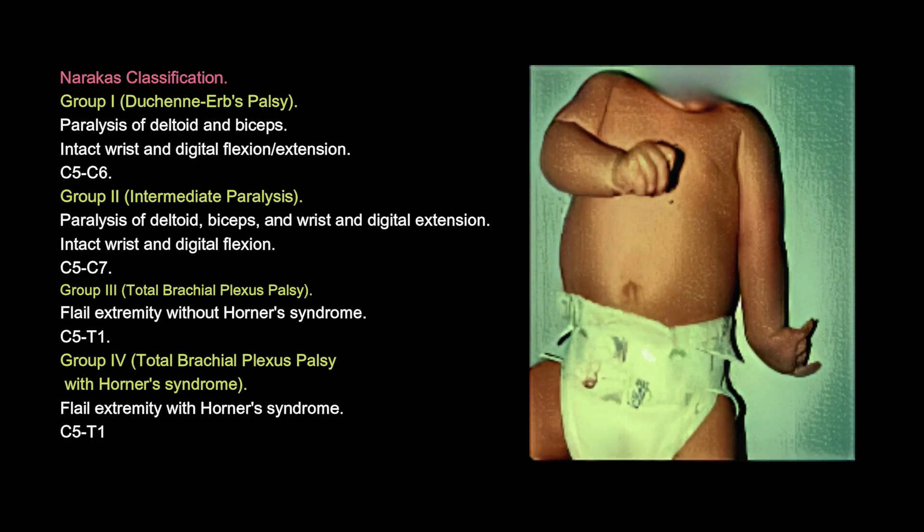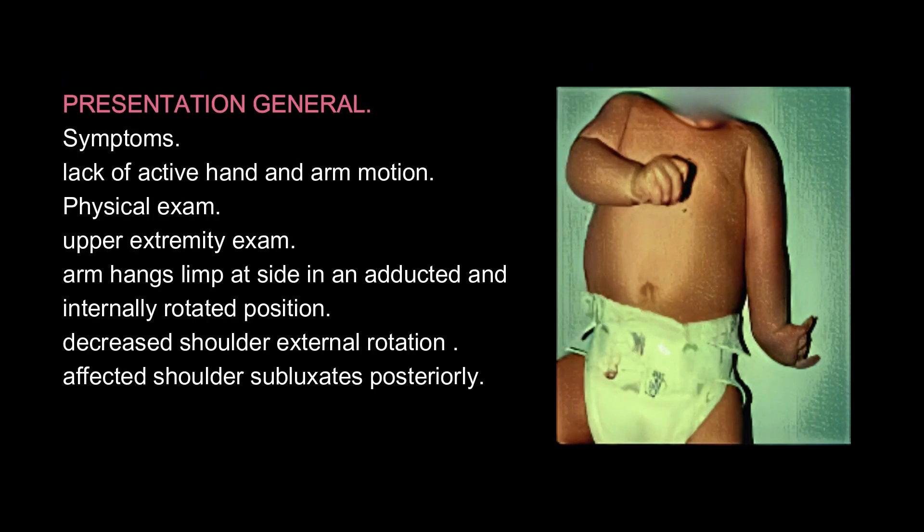Narakas classification: Group 1 (Duchenne-Erb's palsy): paralysis of deltoid and biceps with intact wrist and digital flexion/extension, C5-C6. Group 2 (intermediate paralysis): paralysis of deltoid, biceps, and wrist and digital extension with intact wrist and digital flexion, C5-C7. Group 3 (total brachial plexus palsy): flail extremity without Horner's syndrome, C5-T1. Group 4 (total brachial plexus palsy with Horner's syndrome): flail extremity with Horner's syndrome, C5-T1.